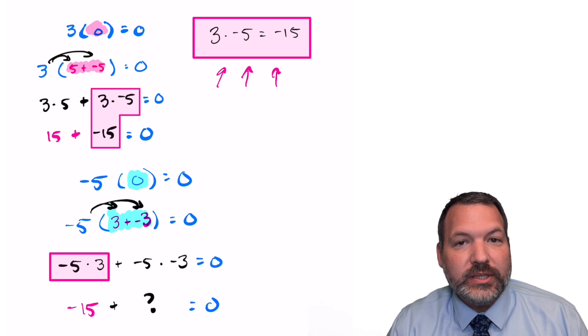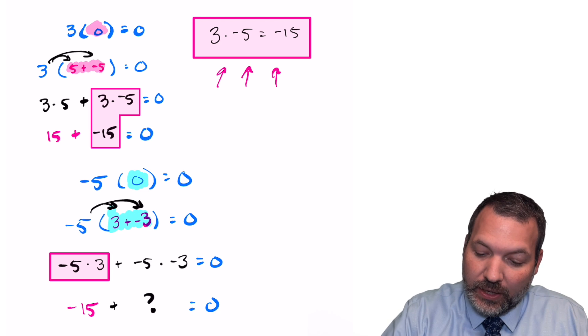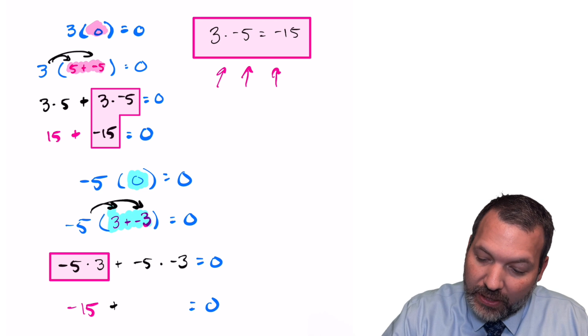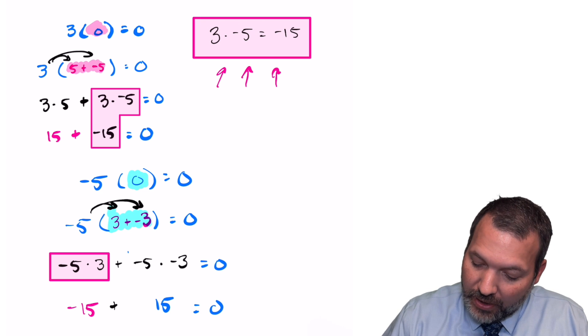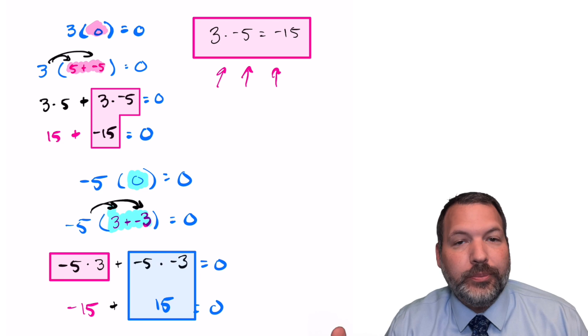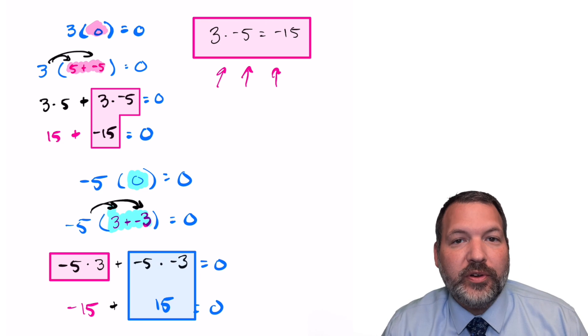and this is supposed to be equal to zero. Well, again, what plus negative 15 is going to make zero? Positive 15. And so we can say now that negative five times negative three should be equal to positive 15 by the distributive property.